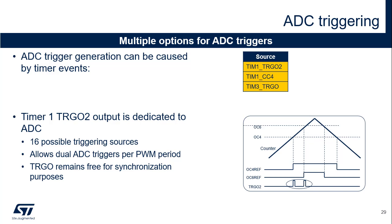The ADCs can be triggered with timer 1 and timer 3 outputs. This can be done using compare events, such as timer 1 channel 4, or the TRGO event, which gives extra flexibility since TRGO can be any compare event or timer internal control signal such as register update, counter reset, or trigger input. Timer 1 also has an additional TRGO2 output fully devoted to ADC triggering. TRGO2 offers 16 possibilities, including the 6 compare events and the option to have a dual trigger per PWM period by combining compare 4 and 6 events, or compare 5 and 6 events. This leaves TRGO free for multiple timer synchronization schemes.